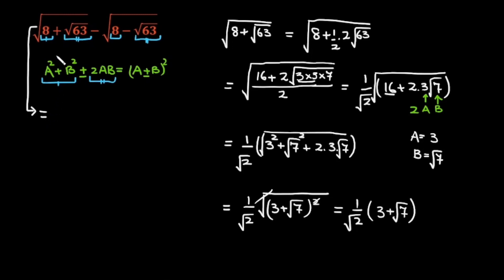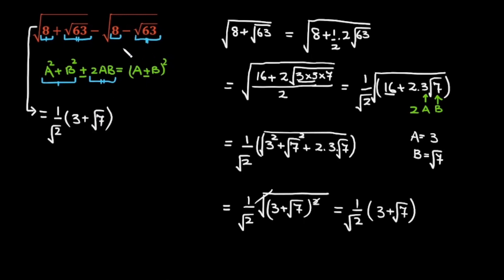So √(8 + √63) is equal to 1 over √2 times (3 + √7). Similarly, the second expression √(8 − √63) is equal to 1 over √2 — inside the bracket, just change the plus sign to minus sign — so this is (3 − √7).